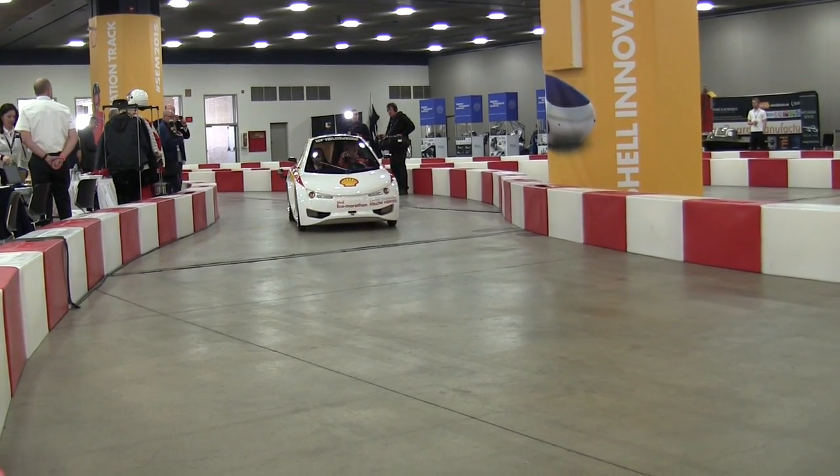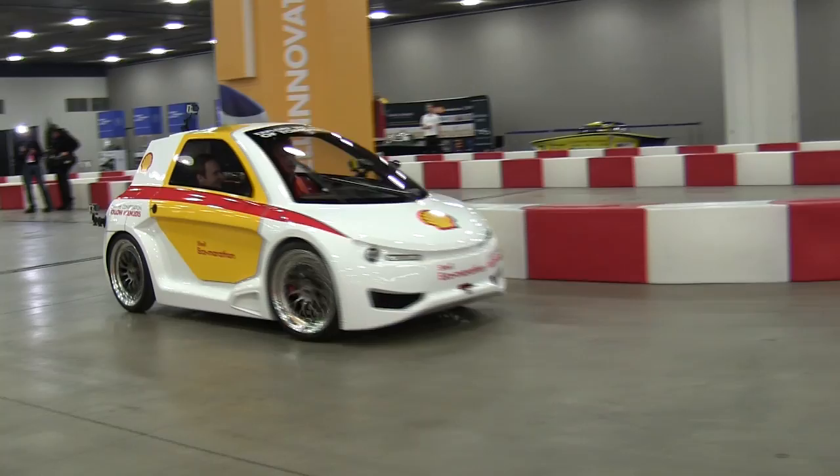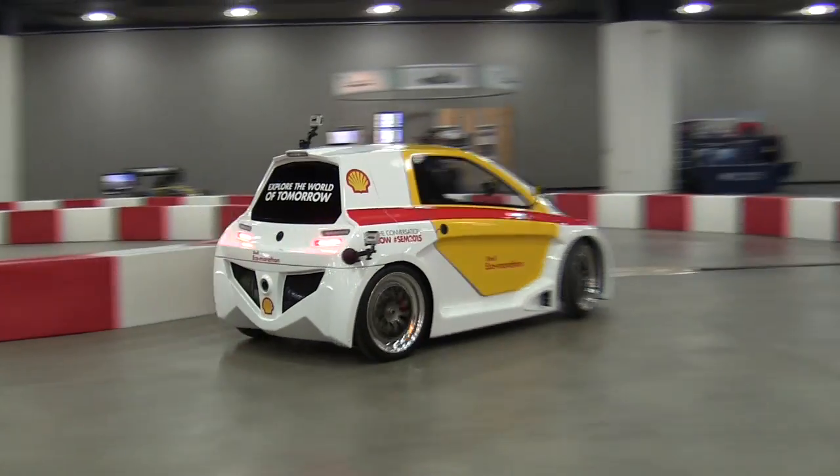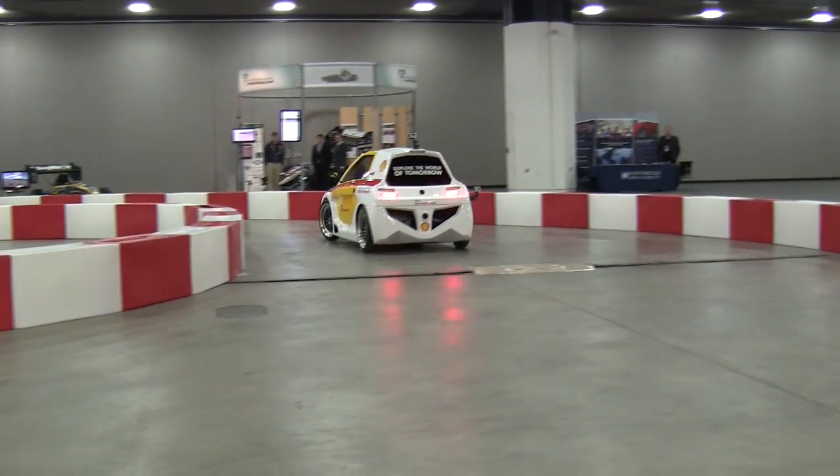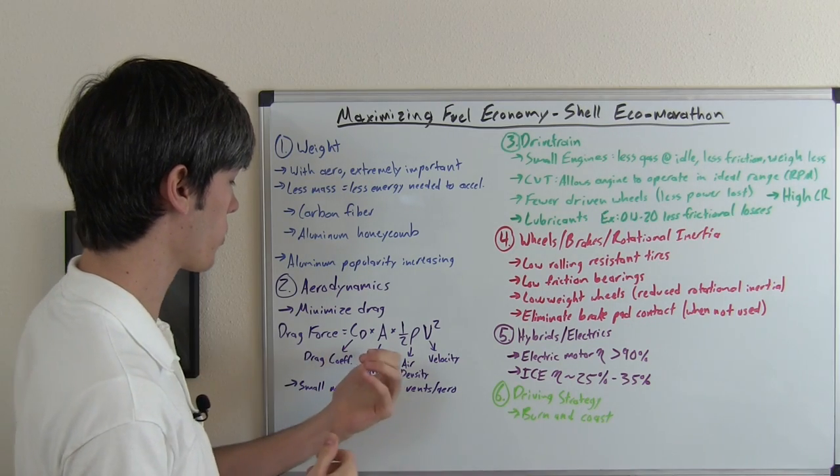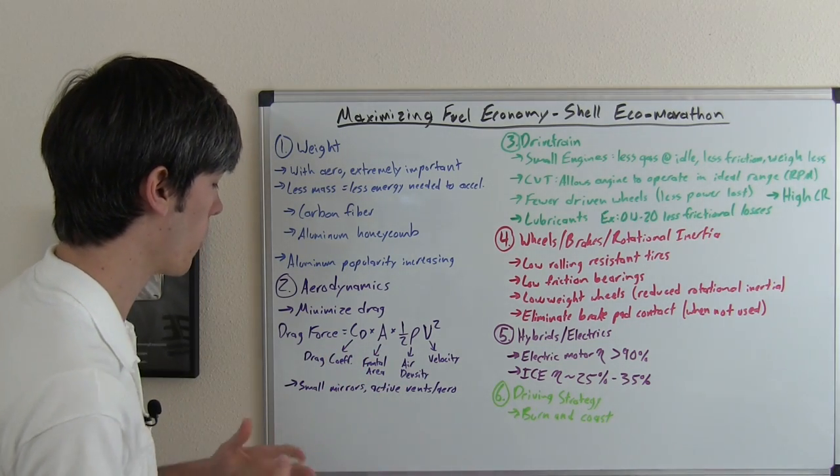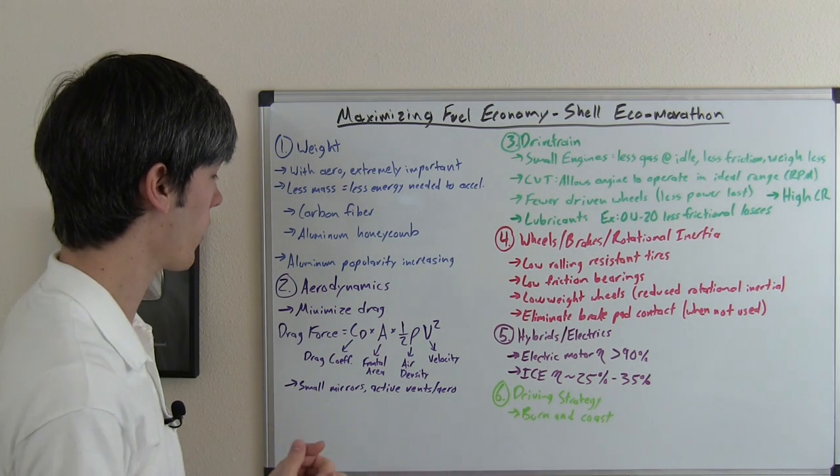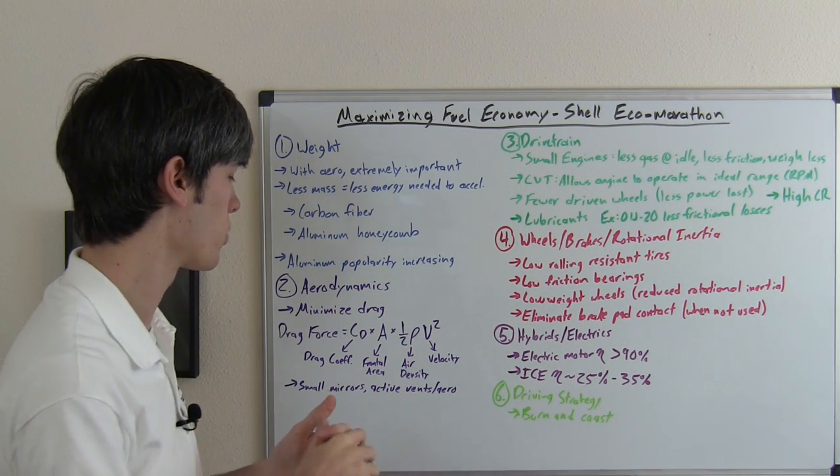So things like small mirrors, active vents and aerodynamics, things like this can change the aerodynamics of the vehicle. Small mirrors, for example, not only impact the drag coefficient but they also impact the frontal area. So using small mirrors can be very beneficial in reducing drag on a vehicle.